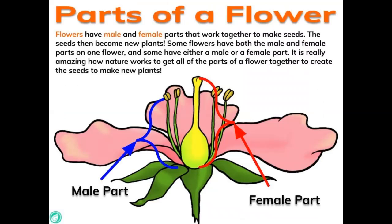There are various parts of the flower that we need to know. Flowers have a male and a female part that work together to make seeds. The seeds then become new plants. Some flowers have both the male and female parts on one flower, and some even have either a male or a female part. It is really amazing how nature works to get all the parts of the flower together to create the seeds to make the new plant.